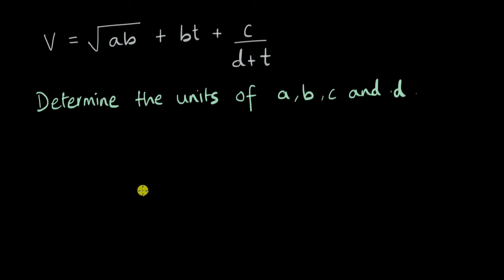Let's solve a question on dimensional analysis. We have an equation: v (velocity) equals the square root of ab plus bt plus c, divided by d plus t. We need to figure out the units of a, b, c, and d.